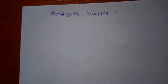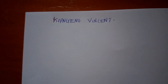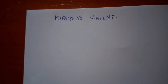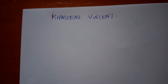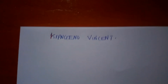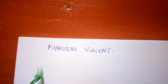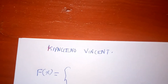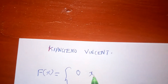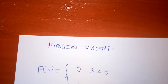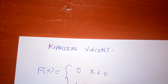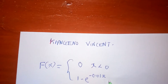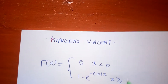I'm going to show you how to find the probability density function given the cumulative density function. Let's look at an example: given the CDF, F(x) equals zero for x less than zero, and one minus e to the negative 0.01x for x greater than or equal to zero.